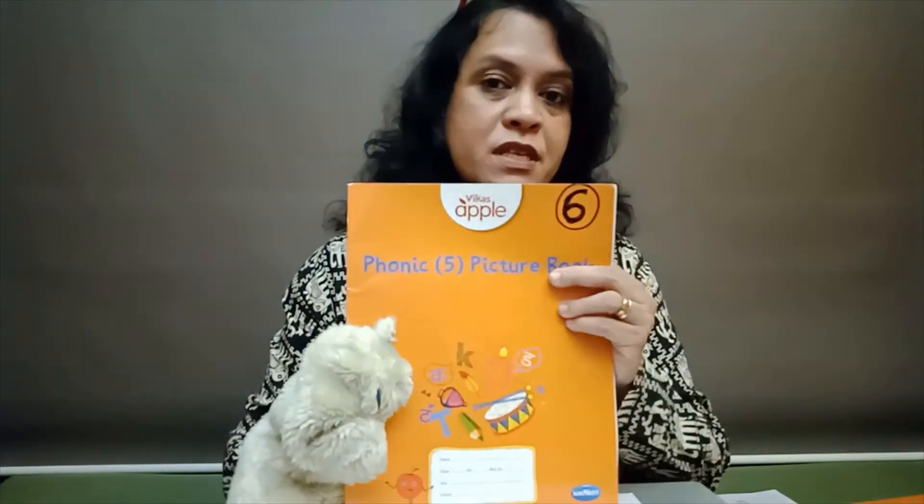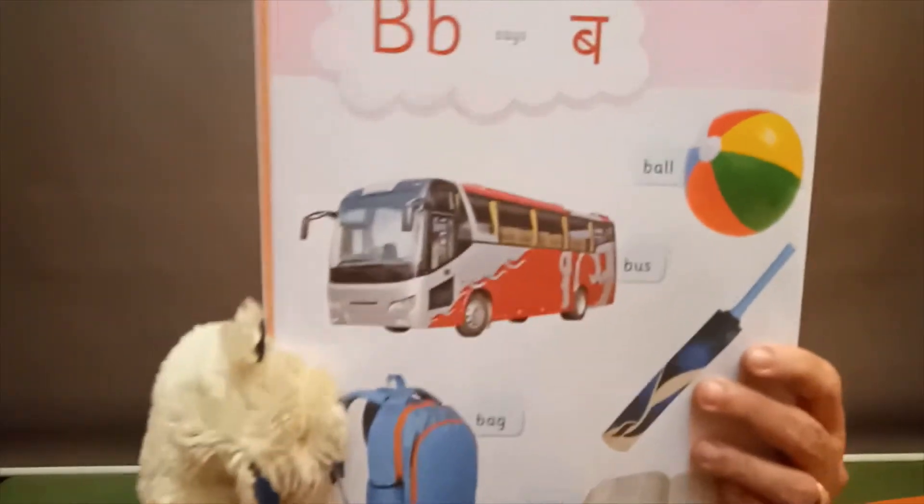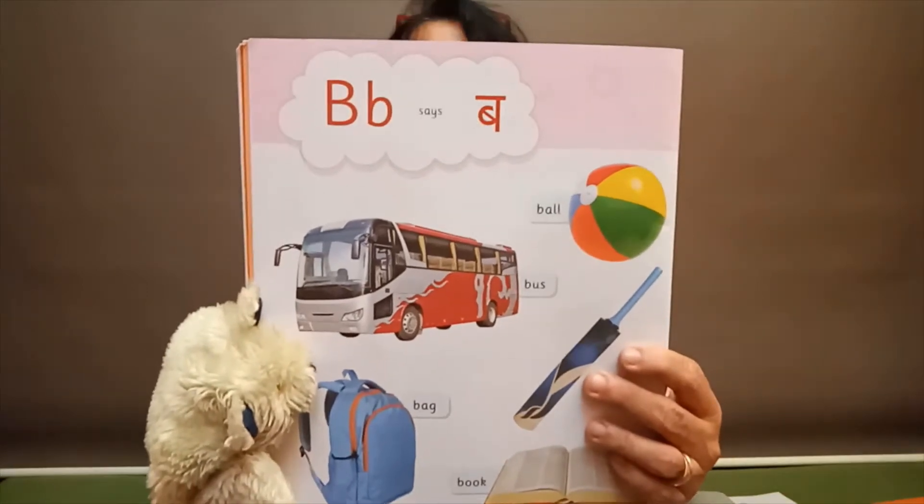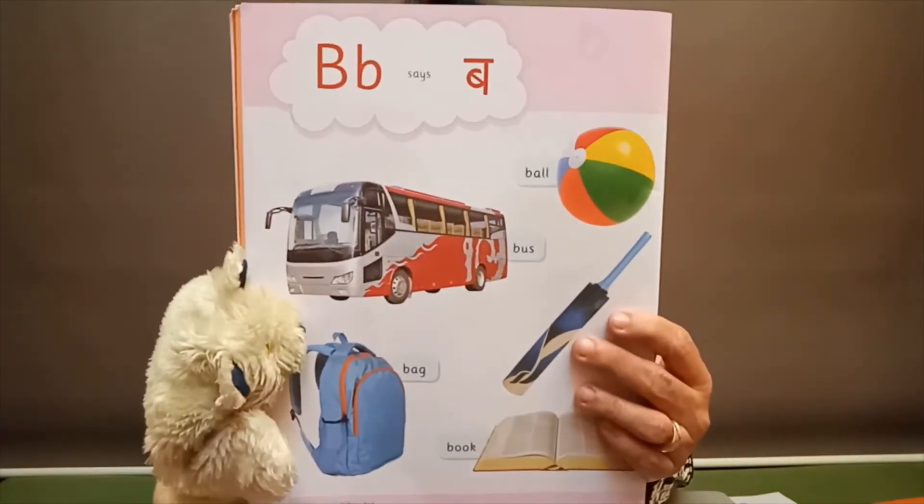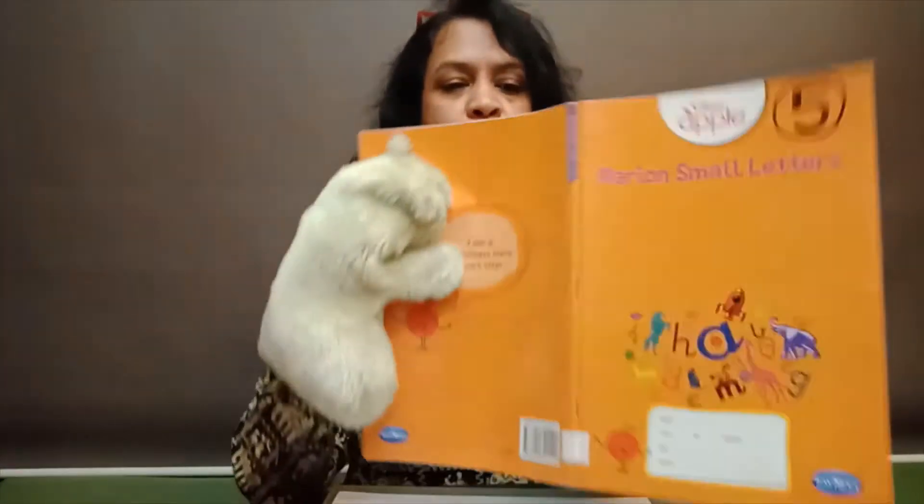After we see how to write the letter b, we first have to read. We'll read, we'll open this book. Now see here, book number six has got so many pictures. B says b and so many pictures. You read all this, once we finish reading then we have to do writing.